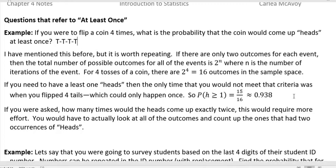If you were asked how many times would the heads come up exactly twice, this would require more effort. You would have to actually look at all the outcomes and count up all the times when there were two occurrences of heads. But at least once, because of that phrase, it gives us an easier out because all we have to do is remember that there's only one time that we would have not at least one. And that would be if we had zero. So that's why at least one is a little special.